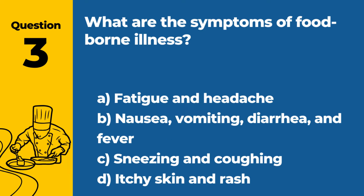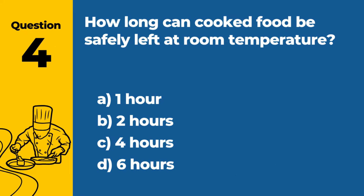Question 3. What are the symptoms of foodborne illness? a. Fatigue and headache. b. Nausea, vomiting, diarrhea, and fever. c. Sneezing and coughing. d. Itchy skin and rash. Answer b. Nausea, vomiting, diarrhea, and fever. The common symptoms of foodborne illness include nausea, vomiting, diarrhea, and fever.